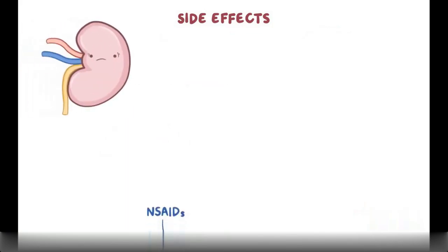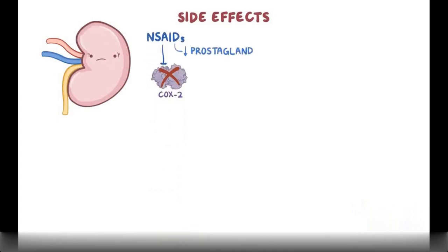In the kidneys, all NSAIDs inhibit COX-2, which decreases the level of prostaglandins that dilate the renal artery, causing a reduction in renal blood flow.